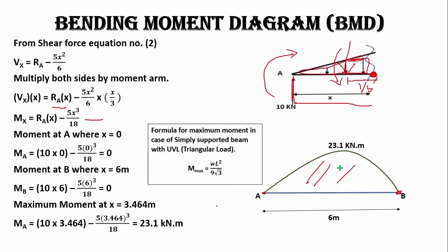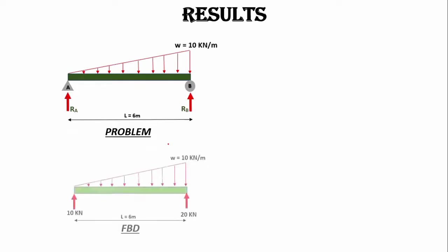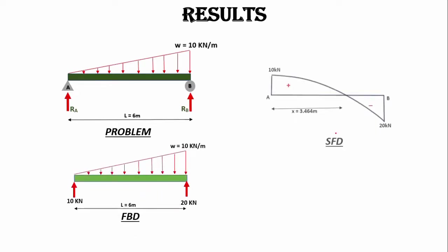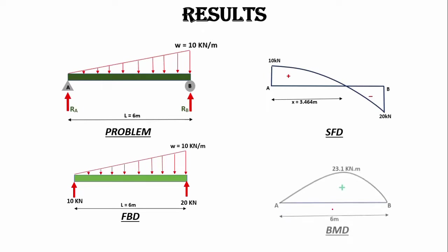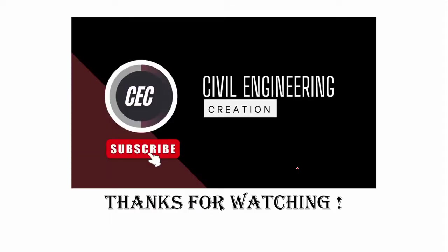We can also find the maximum bending moment for a triangular load using the direct formula by substituting the values. To summarize: the free body diagram shows RA = 10 kN and RB = 20 kN; the shear force diagram has a zero crossing at 3.464 m; and the bending moment diagram has a maximum of 23.1 kilonewton-meters. Thanks for watching.